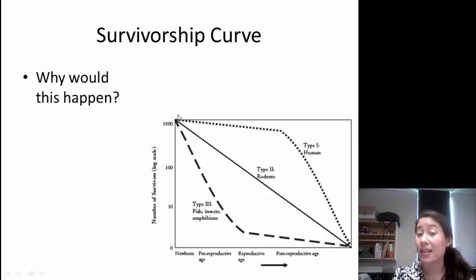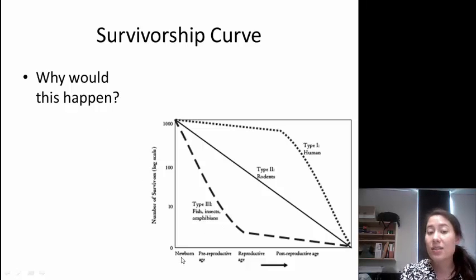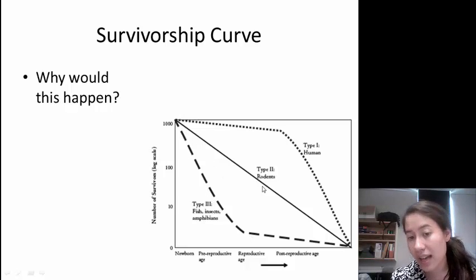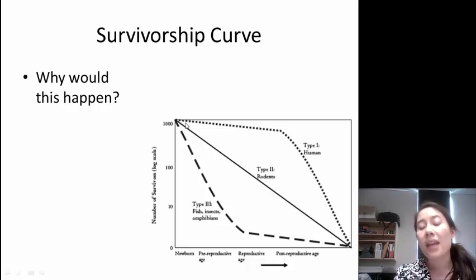This is the actual survivorship curve in your packet with type 1, type 2, and type 3. This is useful because it shows age related to reproductive status. It's got newborns, pre-reproductive age before that organism is able to have children, reproductive age, and then post-reproductive age after an organism is too old to have kids. So type 3 shows a lot of death before the reproductive age, type 2 has equal death throughout pre-, during, and post-reproductive age. And for type 1s, we're seeing a lot of survivorship during the reproductive age and then a sharp decline in the post-reproductive age.